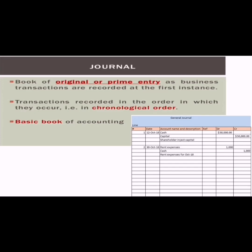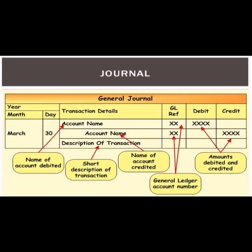Here is the format of the journal, which you can see on your screen. The journal format comprises normally five columns. The very first column belongs to year, month, and day. In the year-month-day column, you first record the year, then the month, then the accurate date on which the transaction actually happens.